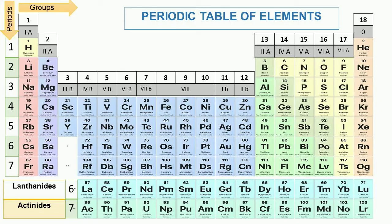There are 18 vertical columns in the modern periodic table and these vertical columns are called groups. These groups are 1A, 2A, 3B, 4B, 5B, 6B, 7B, 8, 1B, 2B, 3B, 4A, 5A, 6A, 7A, and 0. These groups are also numbered 1 to 18.